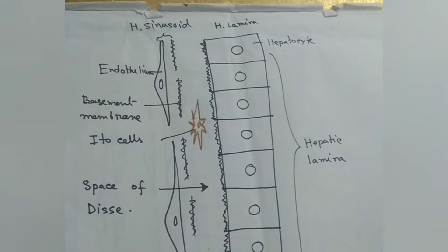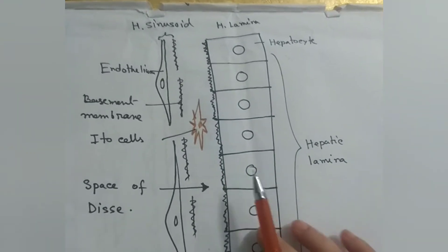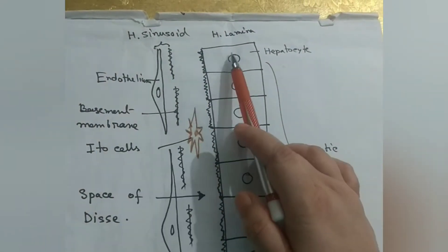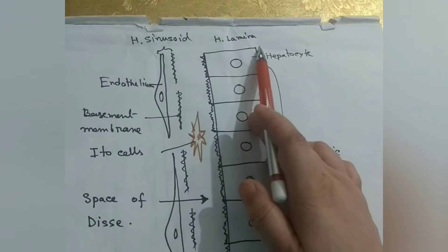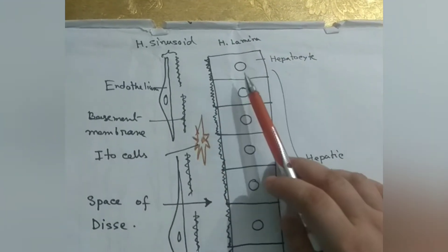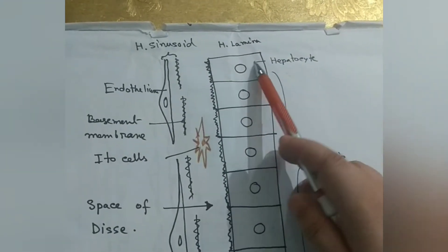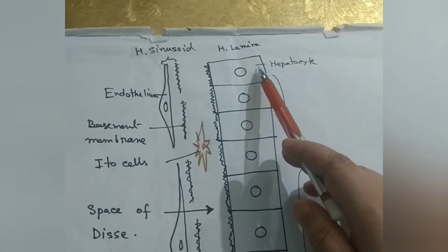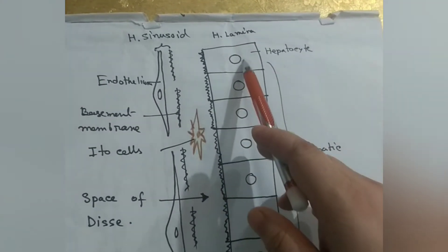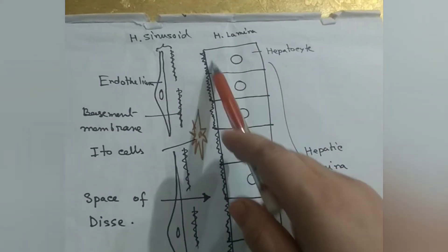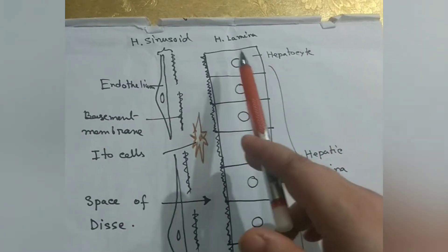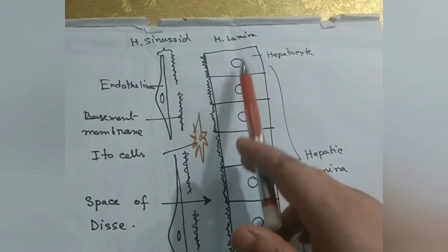The Space of Disse is a tiny space between the hepatic sinusoid and the hepatic lamina. The hepatic lamina is formed by the hepatocytes — a single layer of hepatocytes forms this plate-like structure, which is known as the hepatic lamina.